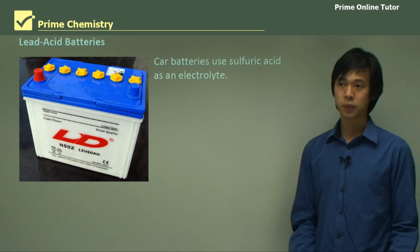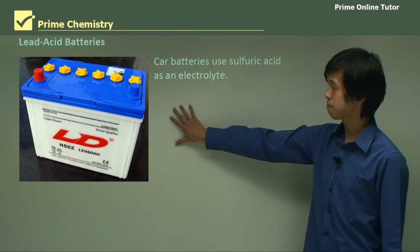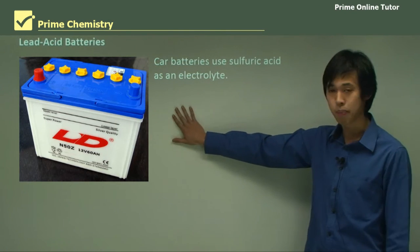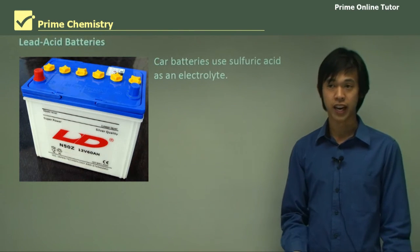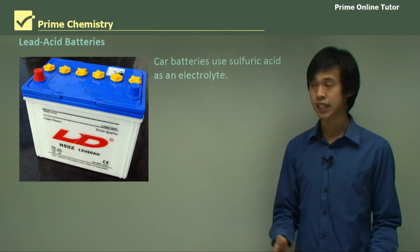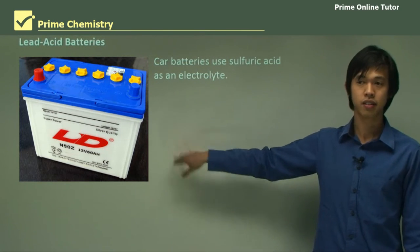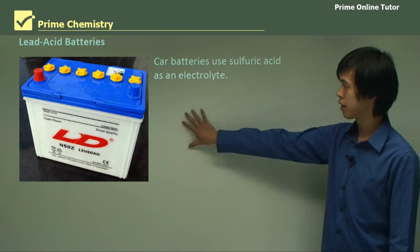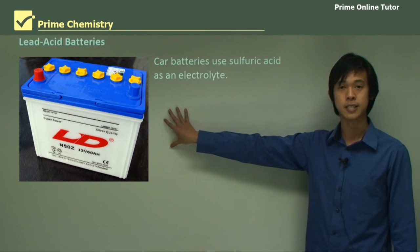Probably the main use of sulfuric acid as an acid is in lead acid batteries — your car battery. Also, if you live in a rural area without access to the electricity grid, you'd store electricity in lead acid batteries, charged with solar panels. Lead acid batteries are a huge market for sulfuric acid.